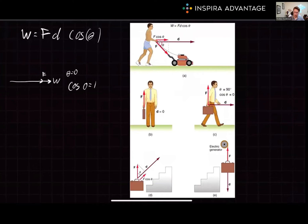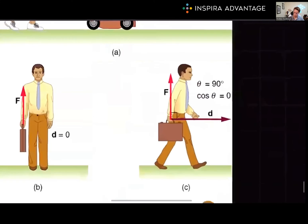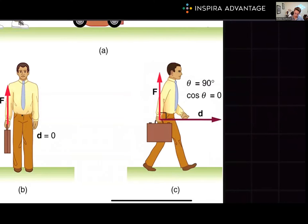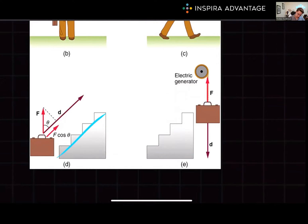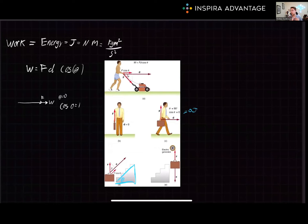Some classic ways work can be tested on the MCAT include pushing an object or carrying something. Note that carrying would be a work of zero because the force applied is at a 90-degree angle to the direction the object moves. Cosine of 90 is zero, so force times distance times zero is always zero — the net work in that example would be zero joules. Another very common scenario involves inclined planes, where cosine theta is neither zero nor one, and the full equation must be used.